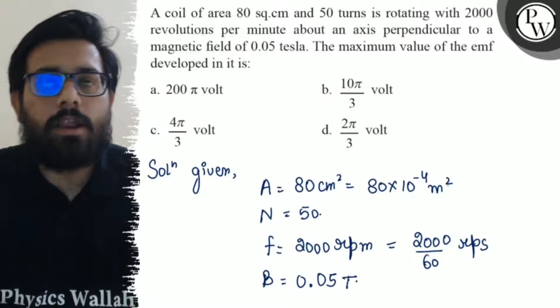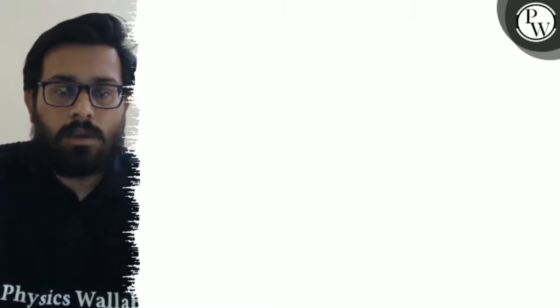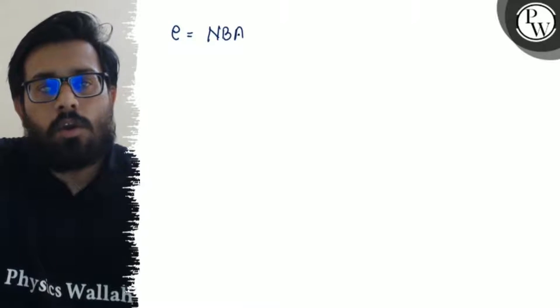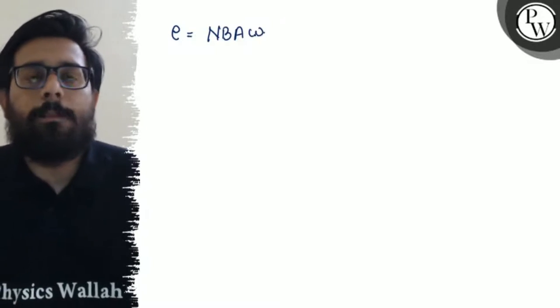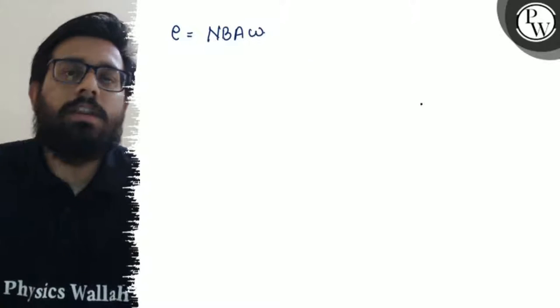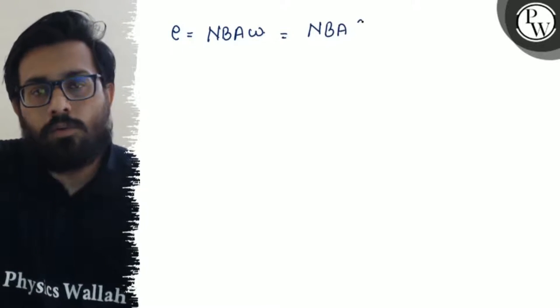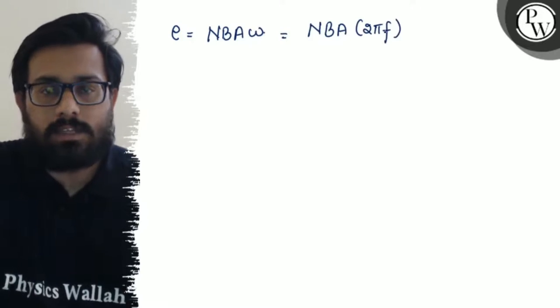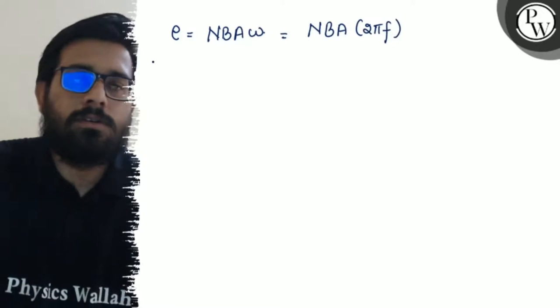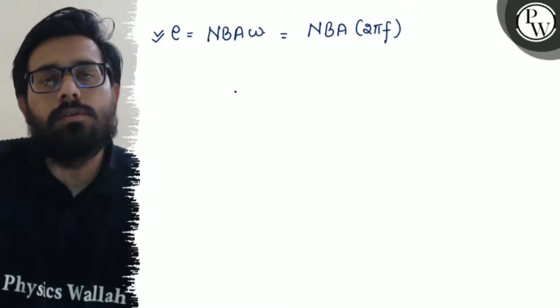And we need to find the maximum value of the EMF developed. So again, we have the formula for the EMF induced which equals NBAω. So here omega is angular velocity. When I convert this, I can write NBA times 2π times frequency in place of omega. This is the formula we know for the induced EMF.